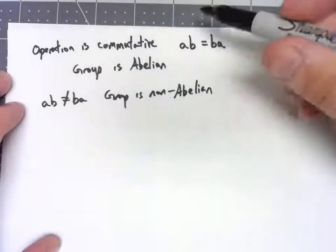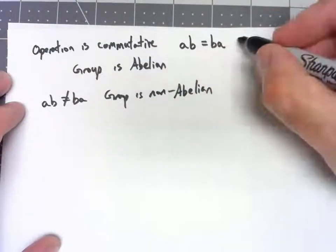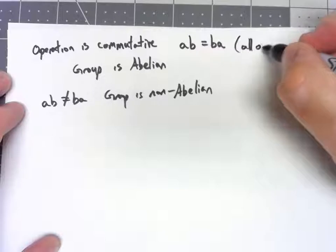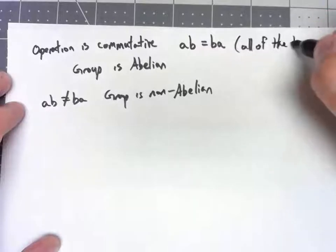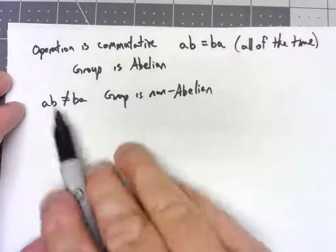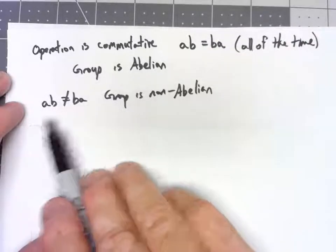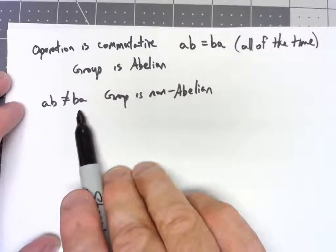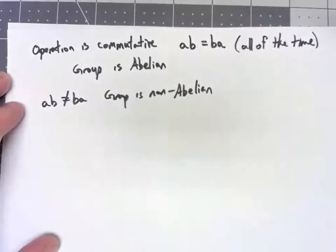It's a really important thing here. To show that it is abelian, all of the time AB must equal BA. No matter what two elements you take, you can multiply them in any order. However, if you can find even a single pair where AB is not equal to BA, then that group's non-abelian.